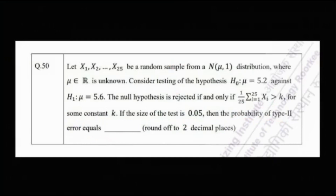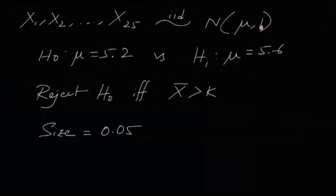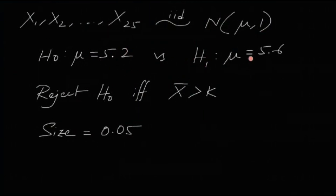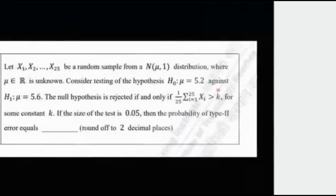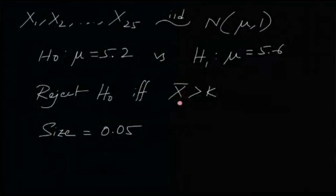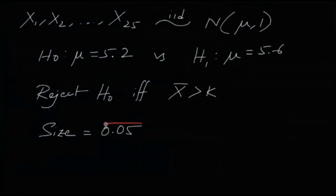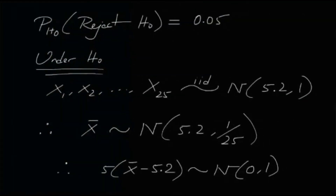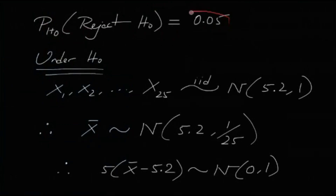We have a random sample where x1 through x25 follow IID normal(mu, 1), and we test mu = 5.2 versus mu = 5.6, rejecting H0 if and only if x-bar — the sample mean — is greater than k. The size being 0.05 means the probability of rejecting H0 under H0 equals 0.05.